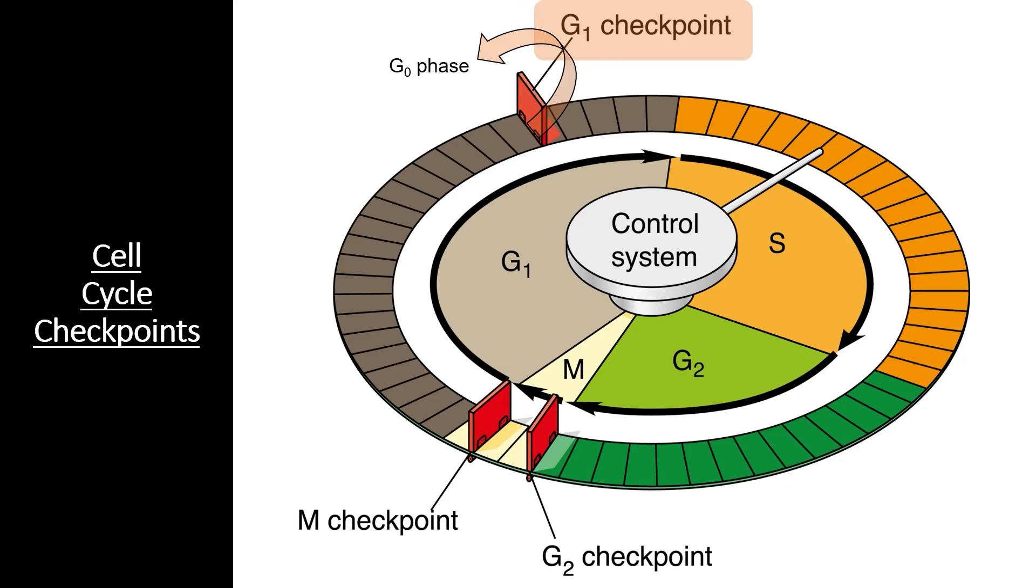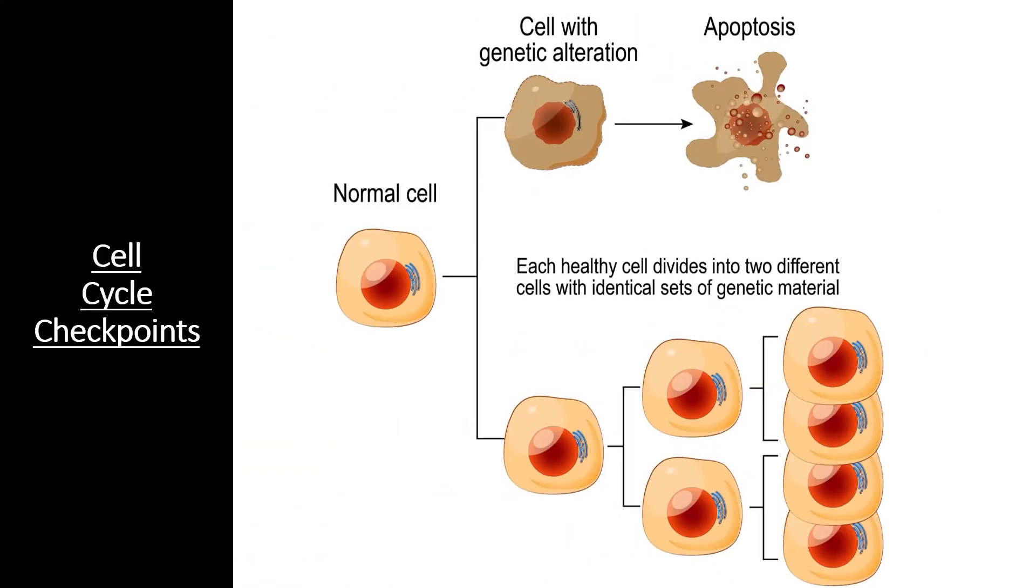The next checkpoint, the G2 checkpoint, comes near the end of the second growth phase. During this checkpoint, the cell ensures that DNA replication has been completed and that the DNA has not become damaged. If the cell passes this checkpoint, it can proceed into mitosis.